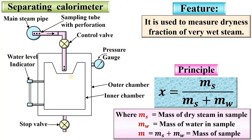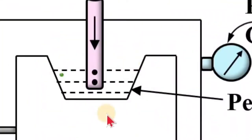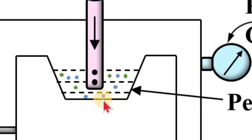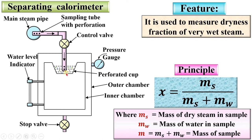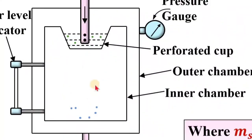Now let us see the animation. First, steam is taken from the main steam pipe through the sampling tube, and then it strikes on this perforated cup, so it is collected here. This steam contains water particles as well as steam particles — the green color represents the steam particles and the blue color represents the water particles. Since water particles have more density than steam particles, they are collected at the bottommost portion of the perforated cup.